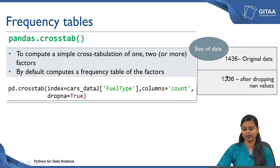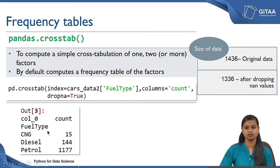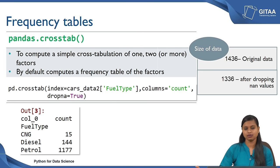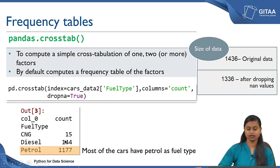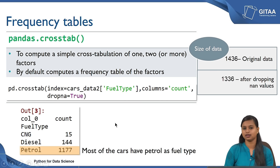Now we are going to create the frequency table by considering only 1336 records. If you see the output, you have the variable and the corresponding categories under fuel type. There are three categories — CNG, petrol, and diesel — with their corresponding frequencies. It is very evident from the output that there are only 15 cars whose fuel type is CNG, 144 cars have fuel type diesel, and petrol has a frequency of 1177. So most of the cars have petrol as fuel type because there are only few cars with CNG and diesel.